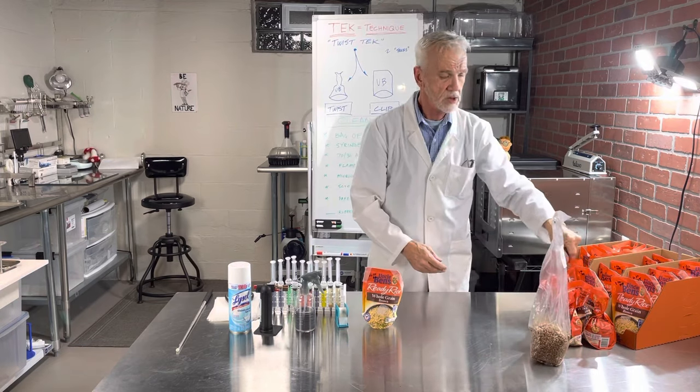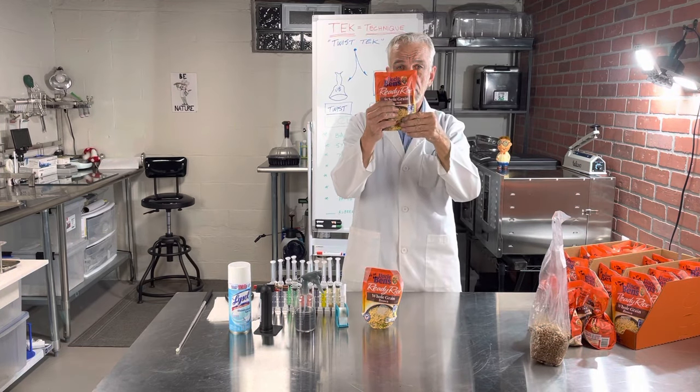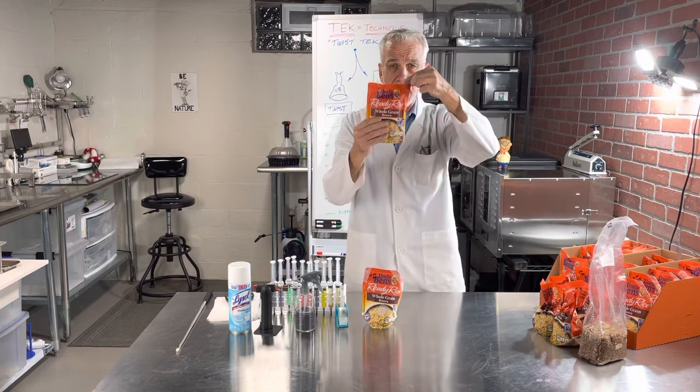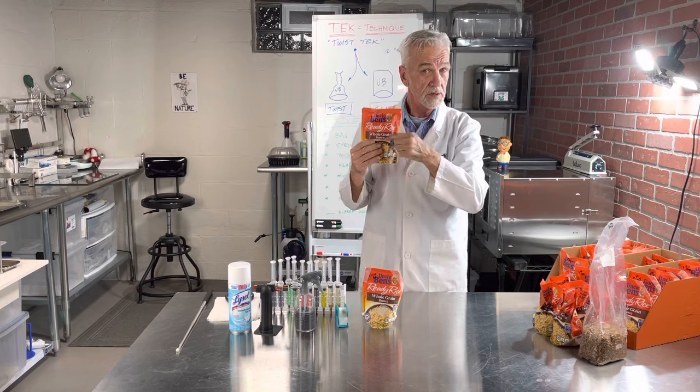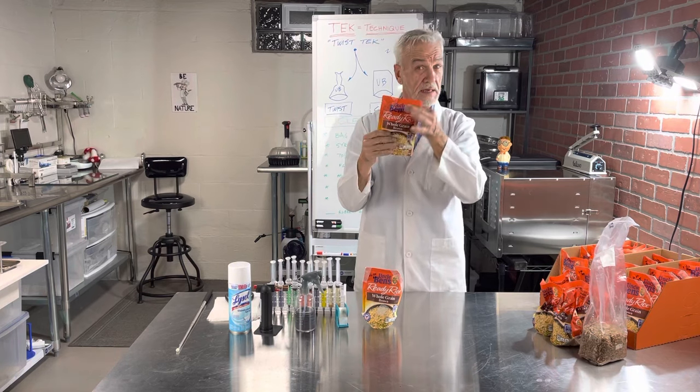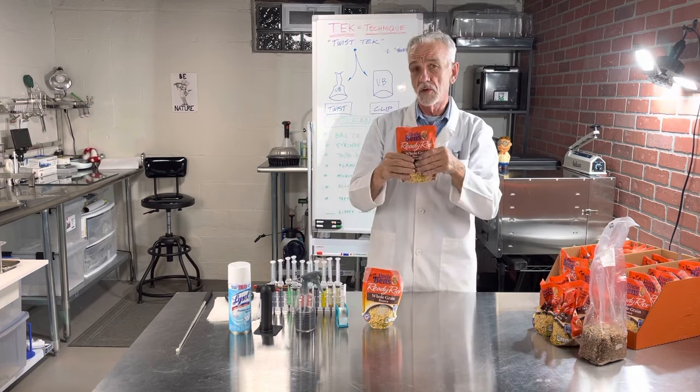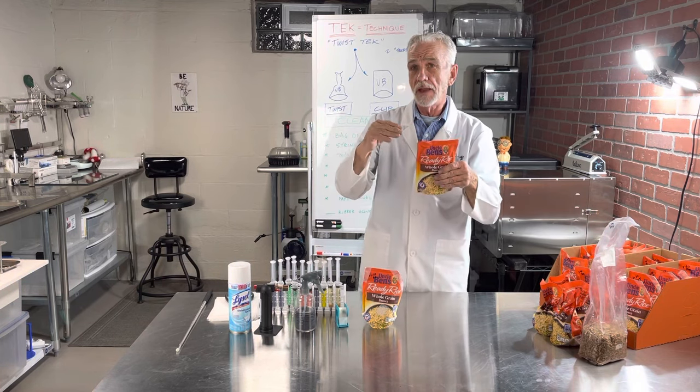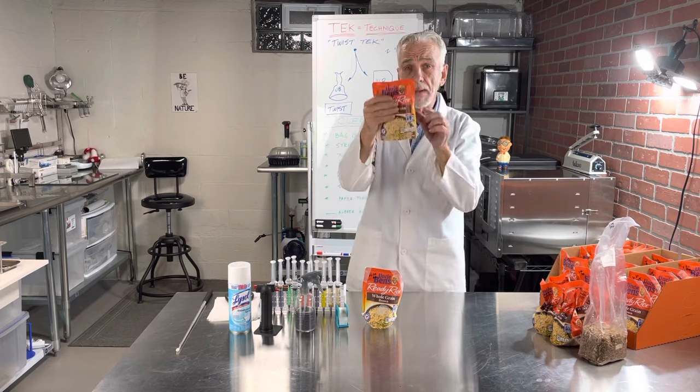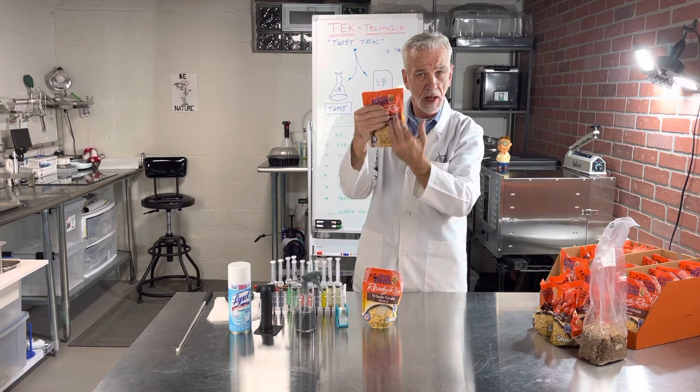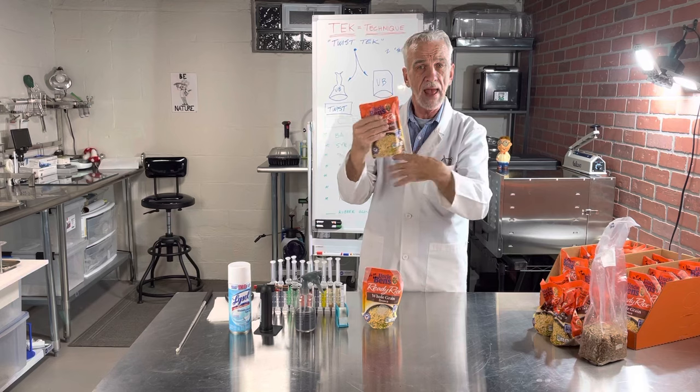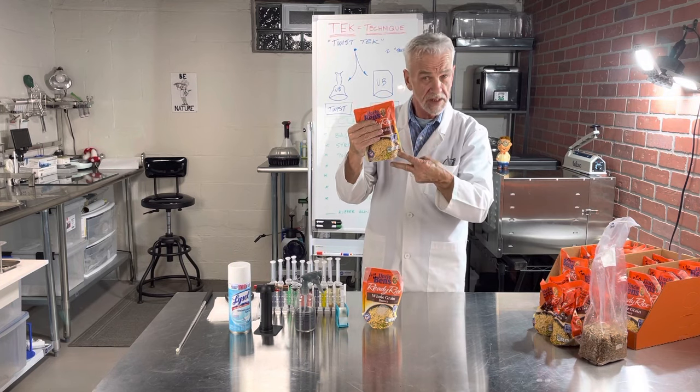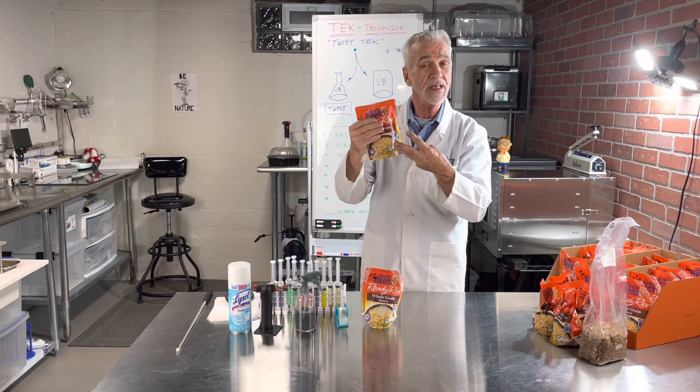So when I get this bag from the store, what I want to do is I want to recreate this bag. I need this bag to have a filter, and I need it to have a chimney. So what I want to do, what we've found out here, that the more compact our rice is down to the bottom of the bag, the better you're going to have in speed of inoculation, in success of inoculation, and less contamination.